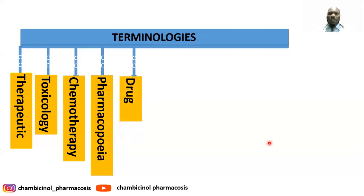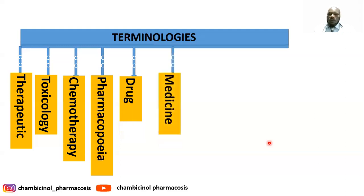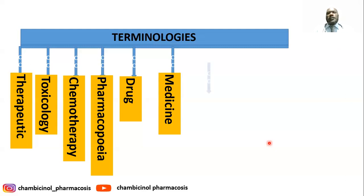Another terminology is drug. A drug is a chemical substance which, when taken by an individual or human, will alter physiological activities. It is used for the diagnosis, control, prevention, and treatment of disease. We also have medicine, which is the formulated form of a drug in a defined dose and dosage form, used for diagnosis, treatment, prevention, and control of disease.